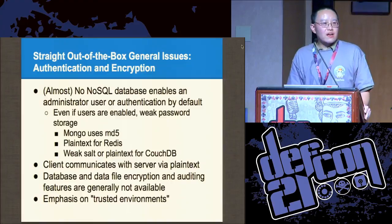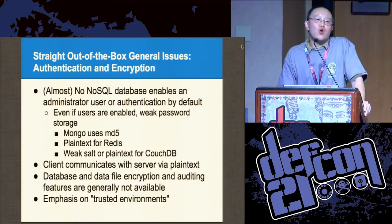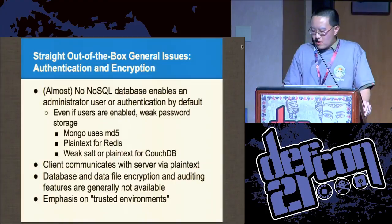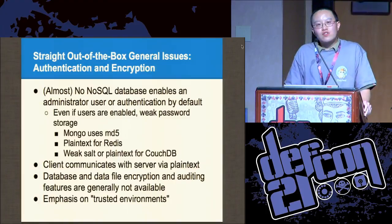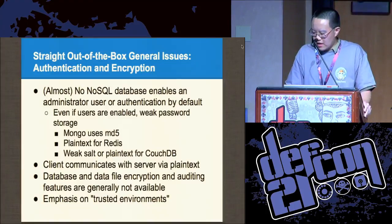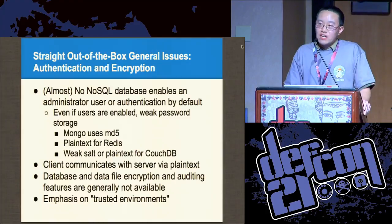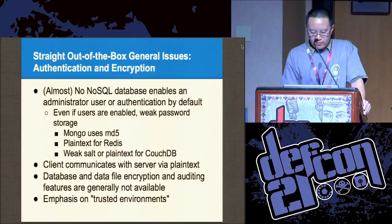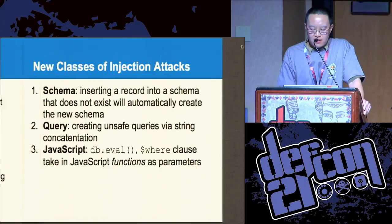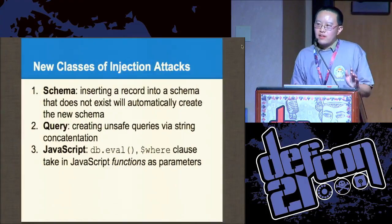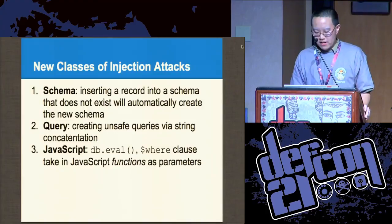How big are NoSQL databases out there right now? If you do a search on Shodan, there are 40,000 instances of Mongo out there, and also 20,000 instances of Redis running. So it's a big deal — it's already there. These are homogeneous issues that affect all NoSQL databases.